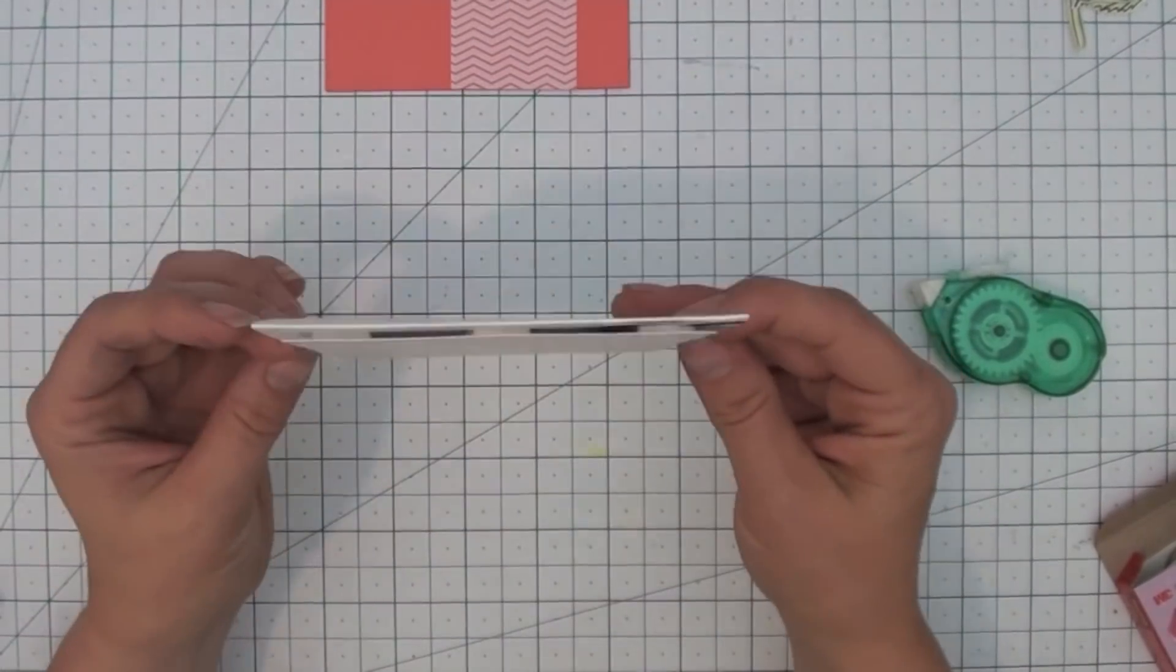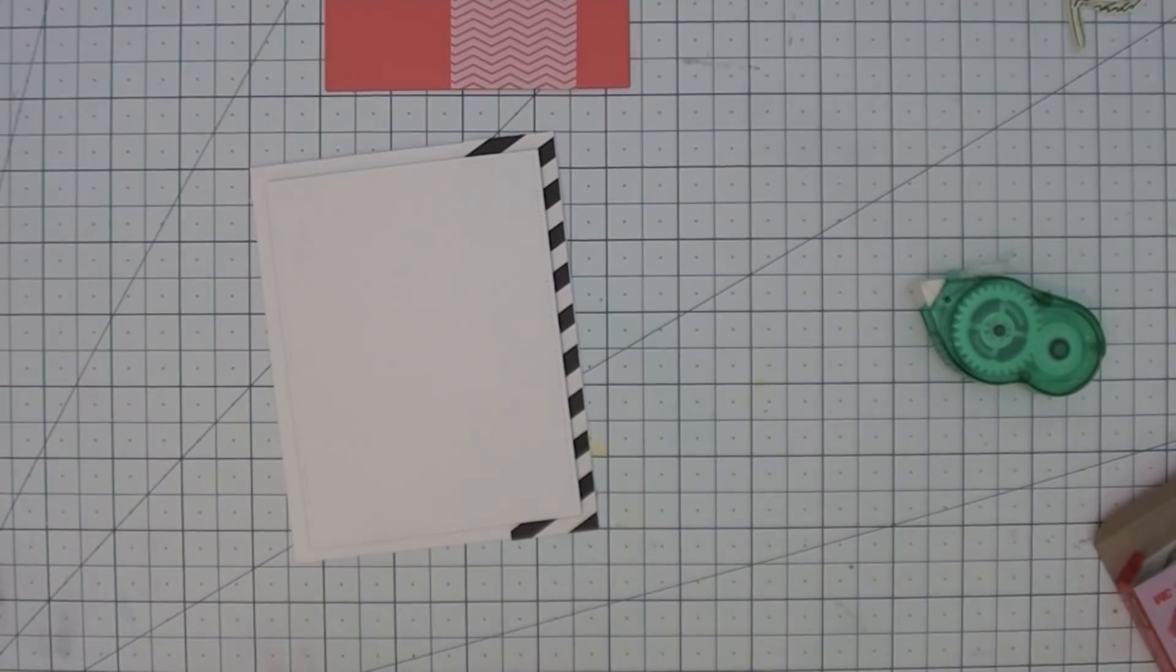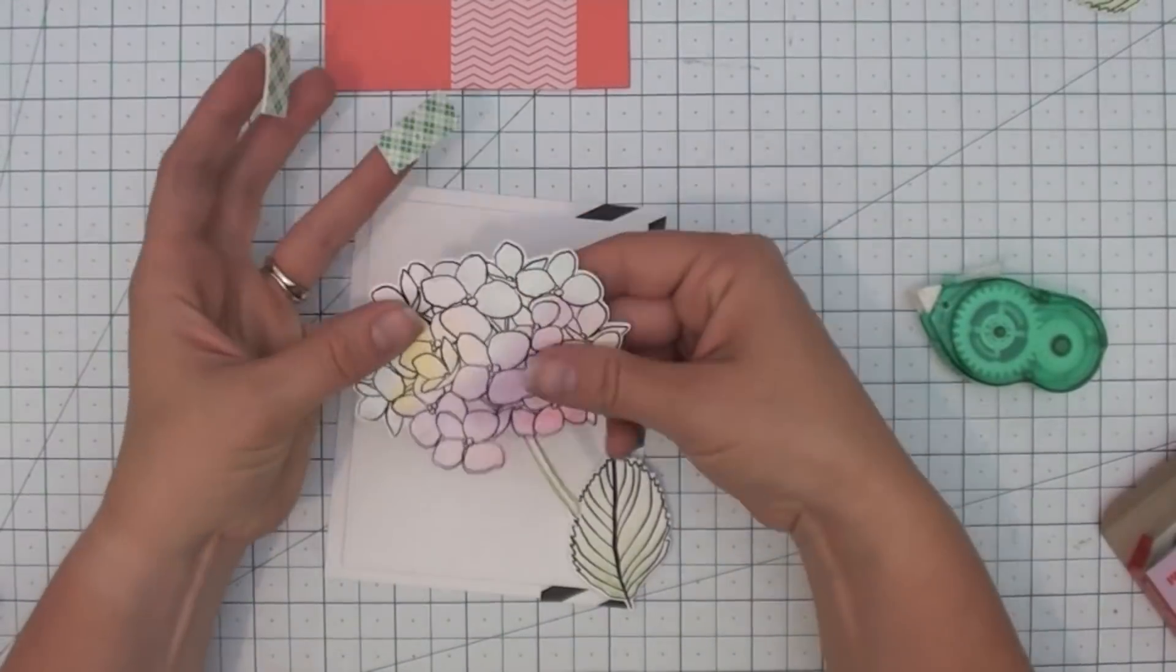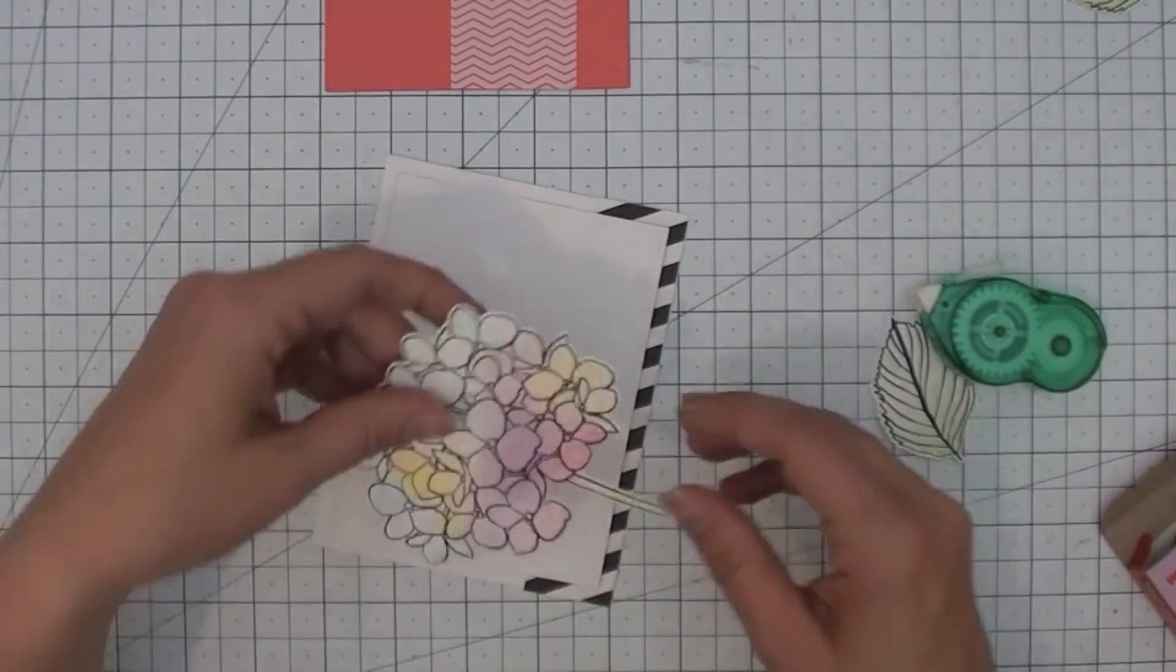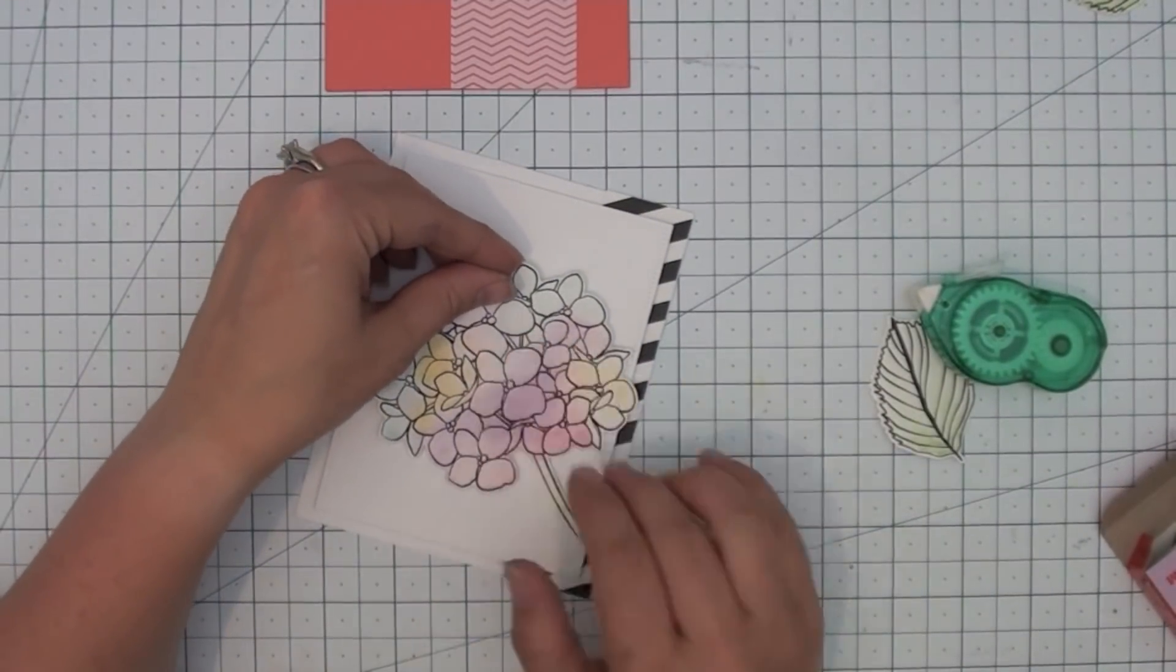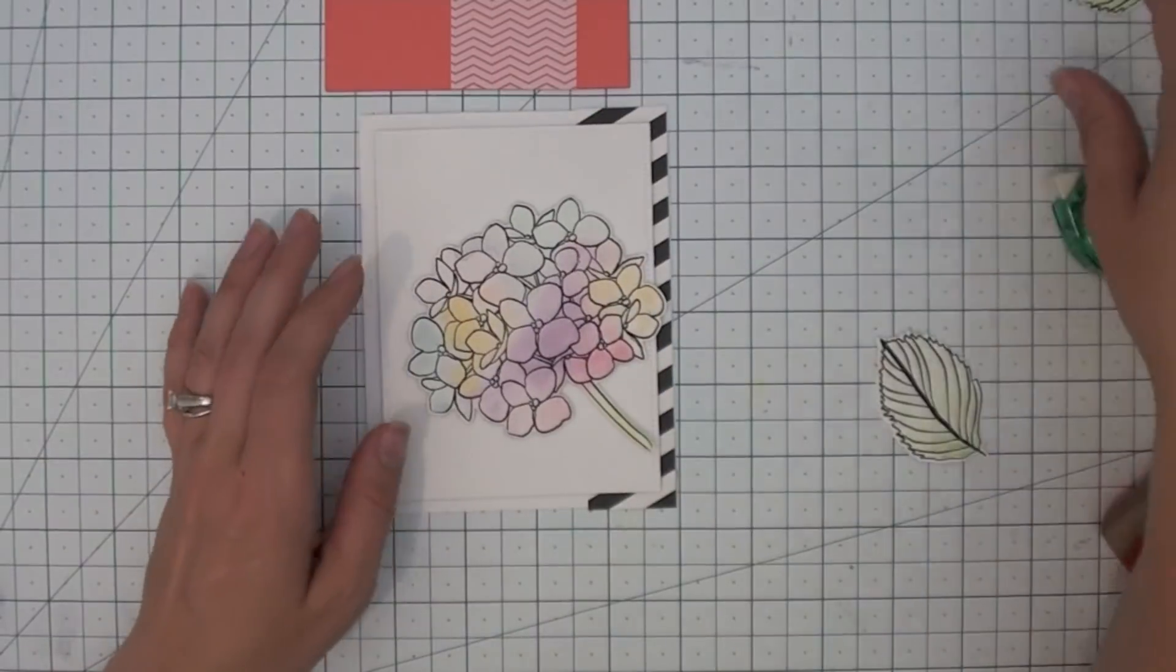Next I've got this little hydrangea from the Essentials by Ellen Mondo Hydrangea, which I love, and I've got it pre-stamped and watercolored. So you can see I'm using that same foam, but just positioning it behind each of the stamped images.